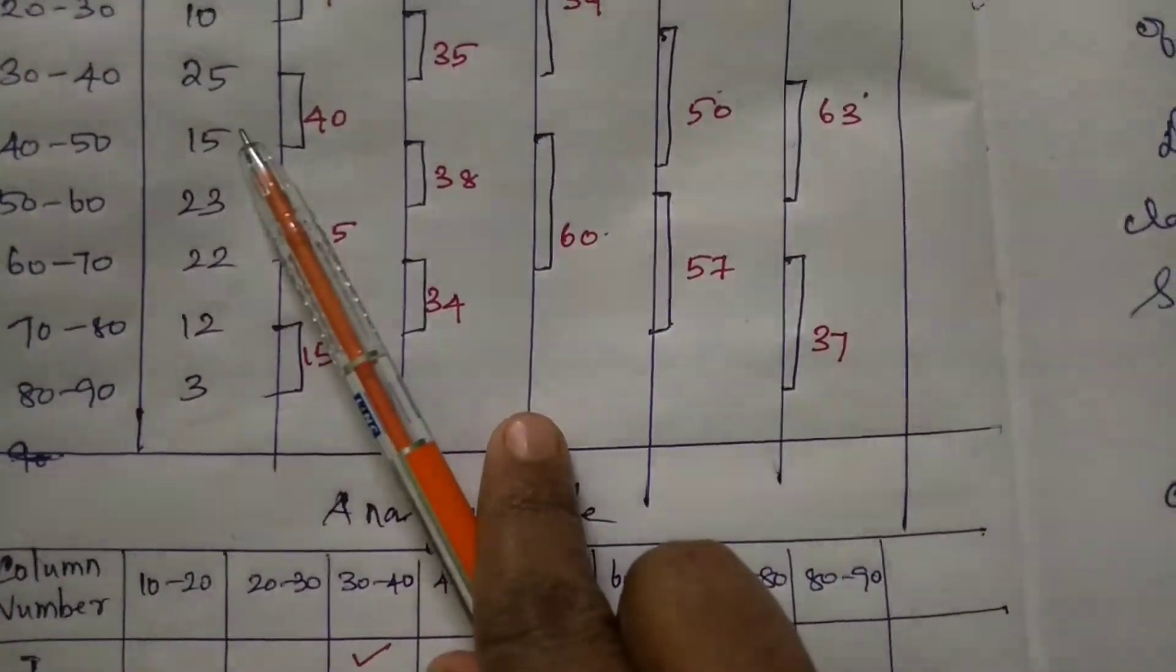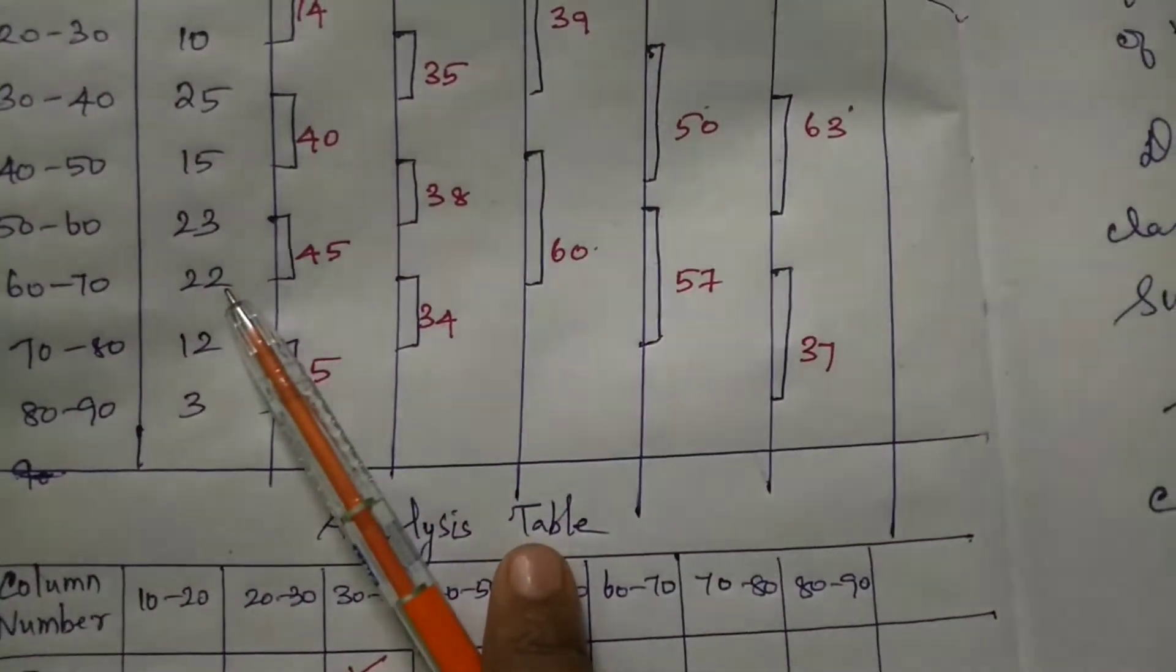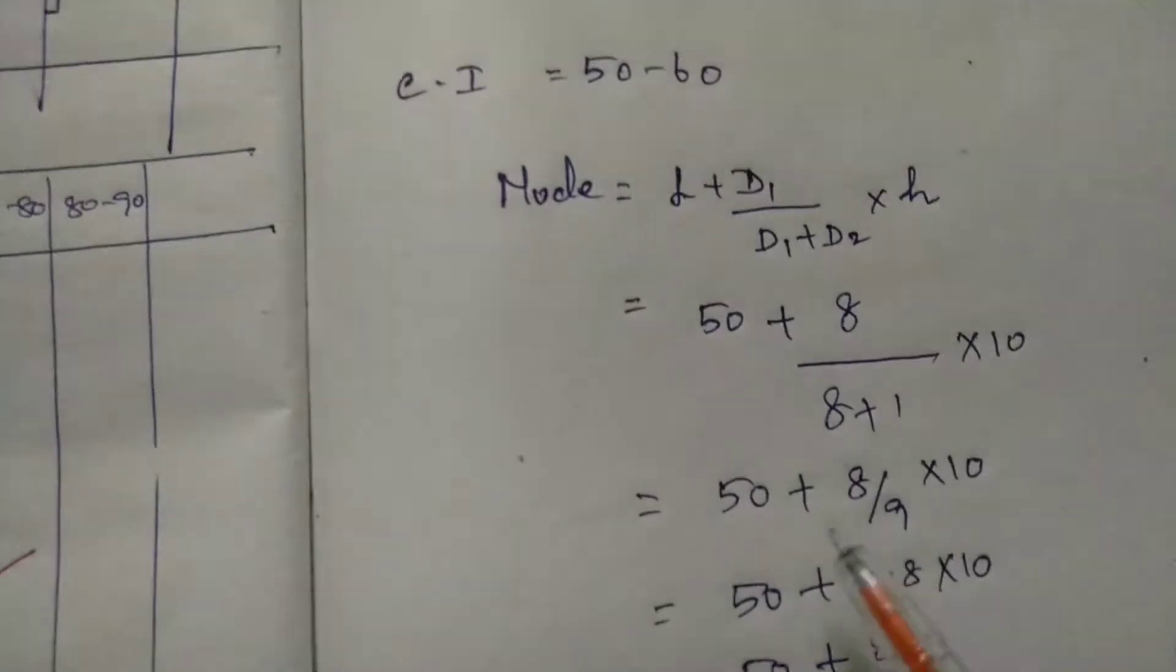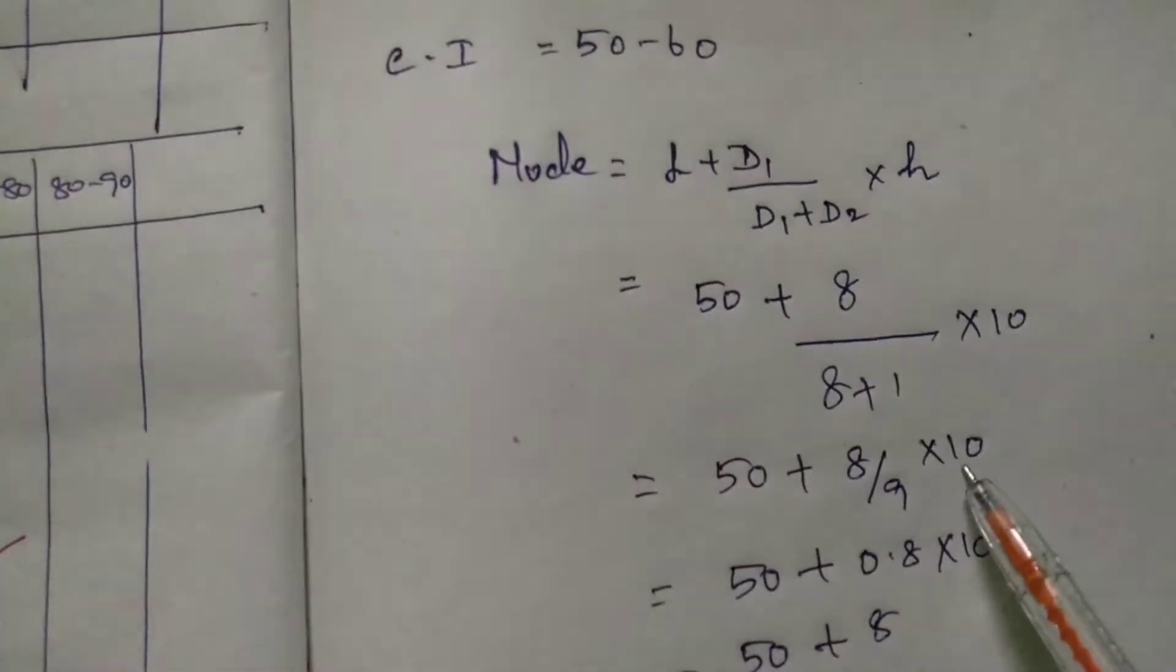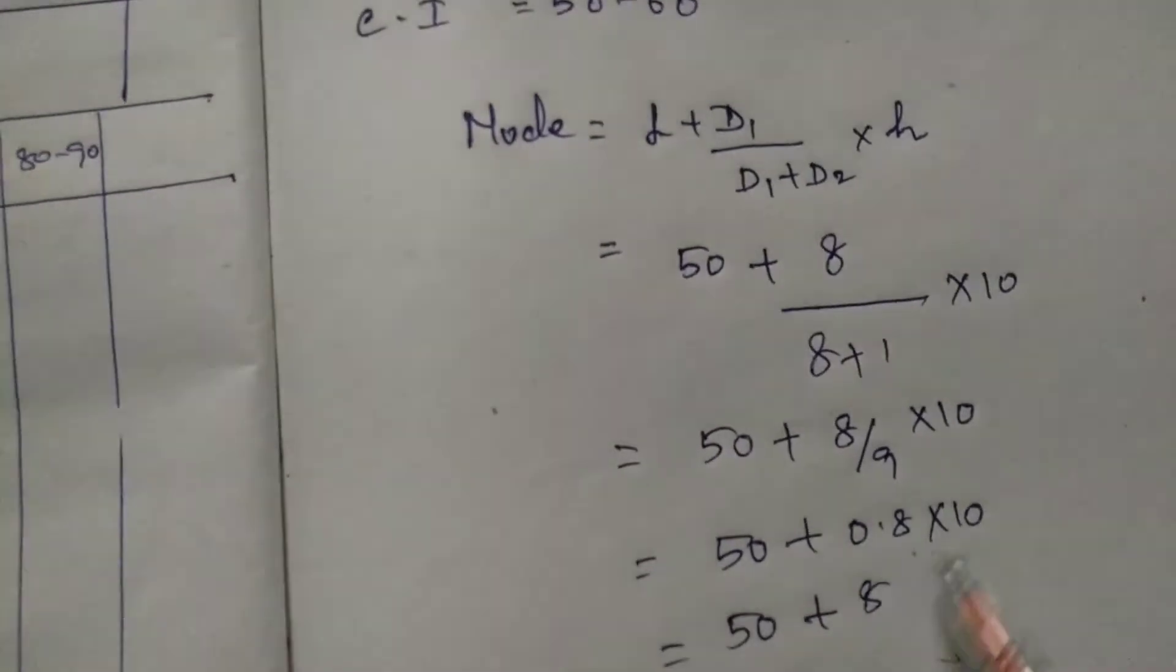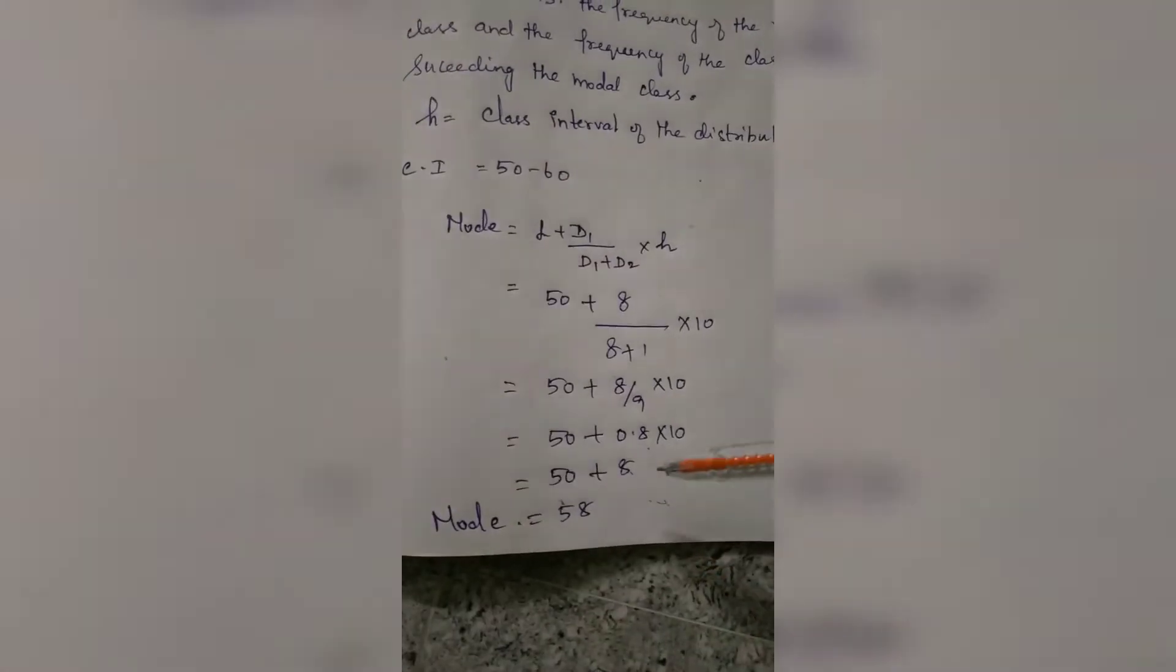That is D1. D2 is 23 minus 22. The class interval is 10. So, 50 plus 8 divided by 8 plus 1, multiplied by 10. 50 plus 8 by 9 times 10. 8 divided by 9 is 0.8, multiplied by 10 equals 8. So 50 plus 8 equals 58.